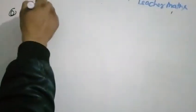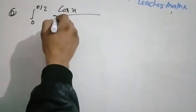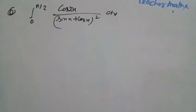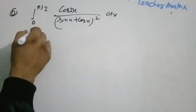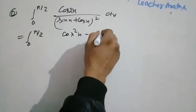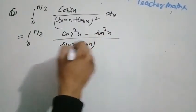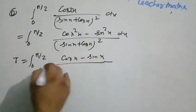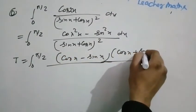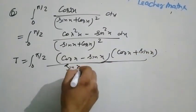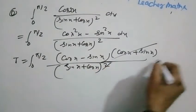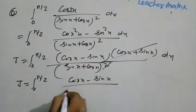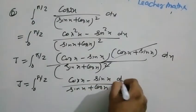Next question: integration from 0 to pi by 2 of 2x upon (sin x plus cos x) squared dx. Finding the limit: 0 to pi by 4 of (cos squared x minus sin squared x) over (sin x plus cos x) squared dx becomes 0 to pi by 2 of (cos x minus sin x)(cos x plus sin x) over (sin x plus cos x) squared dx. The (sin x plus cos x) terms cancel, leaving 0 to pi by 2 of (cos x minus sin x) over (sin x plus cos x) dx.